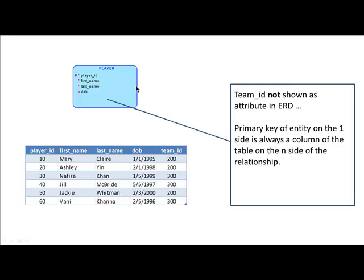On the one side of this one-to-many relationship you have team, whose primary key is team ID. That is automatically an attribute of the entity on the many side, namely the player. It has to be, because that's the only way the relationship can be shown in a table — so when we convert this diagram into a relational table, we'll automatically add that as an attribute. So that is implicit. These diagrams can get pretty complicated very soon, and we don't want to add complexity by including redundant things.